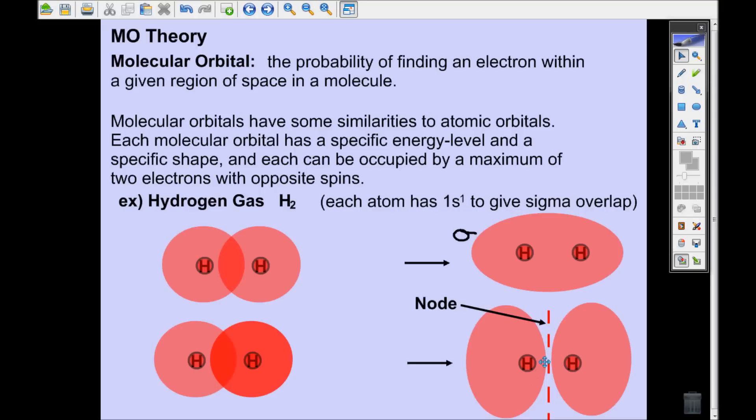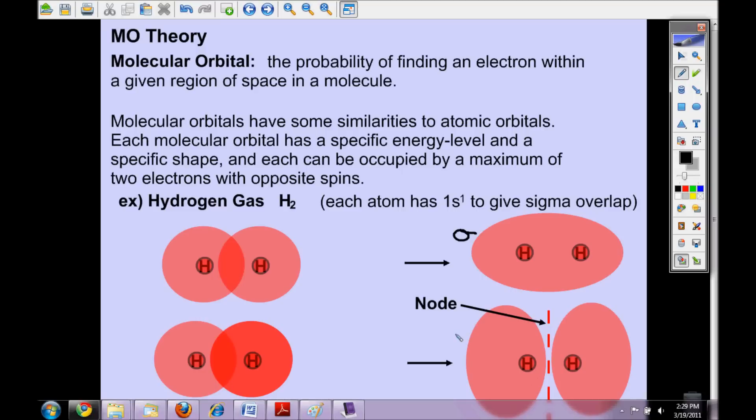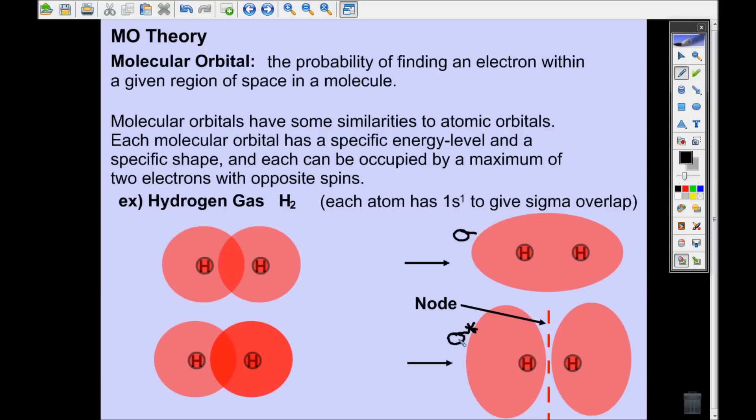Electrons will not be found here. They won't be found in the node because that's just an area that's been canceled out. They can't exist there. This type of orbital is still a sigma orbital, but it's called an anti-bonding orbital, and we put a little asterisk by it to say that it's anti-bonding. If electrons are in an anti-bonding orbital like this, they're going to exist over here and over here. They won't be in between the two atoms, so there's no bond that will form. That is the difference between a bonding orbital like this up here and an anti-bonding orbital.